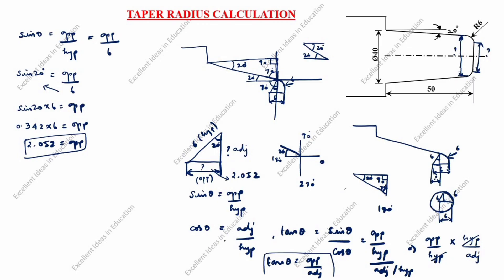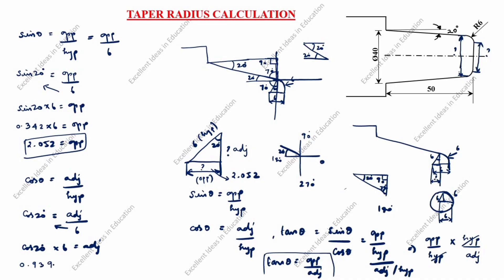Now we will find the adjacent. Cos theta equals adjacent over hypotenuse. So cos 20 degrees equals adjacent over 6. Cross-multiplying: cos 20 × 6 equals adjacent. Cos 20 equals 0.9396, so 0.9396 × 6 equals adjacent = 5.63.